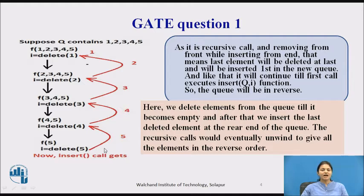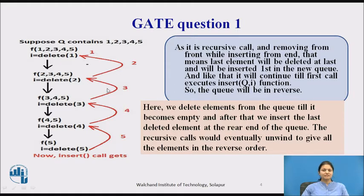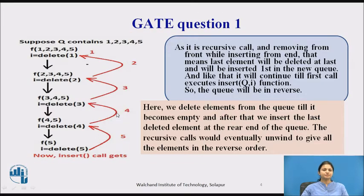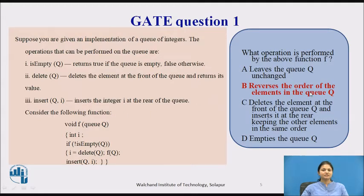The last element deleted is 5, and that is inserted into the queue as the first element. Then 4 becomes the second element, 3 the third, 2 the fourth, and 1 the fifth. So the queue is reversed. These operations are reversing our queue, and the final answer is: reverse the order of elements in the queue.